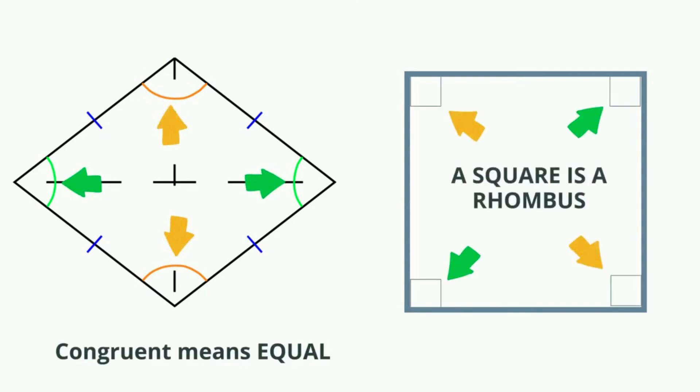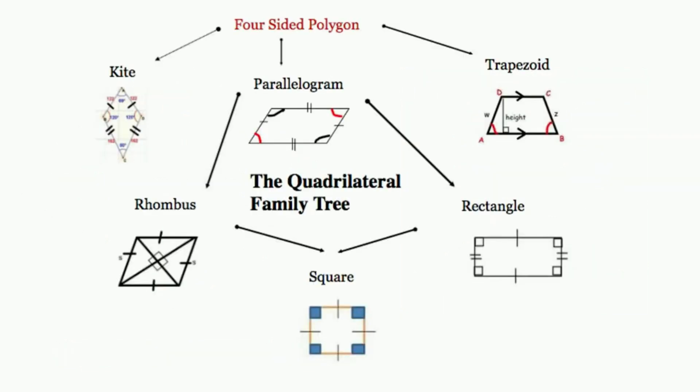Now a rhombus has been described as a special parallelogram. Remember, a parallelogram has two pairs of parallel sides.